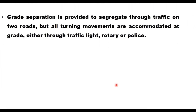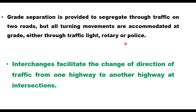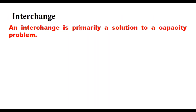Grade separation segregates traffic on two roads, but all turning movements are accommodated at grade — either through traffic lights, a rotary, or police control. That is the main difference between an interchange and a grade separation. Interchanges facilitate the change of direction of traffic from one highway to another at intersections without any at-grade crossing, whereas in grade separation only one or two movements are at different levels while other movements remain at grade.